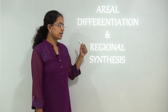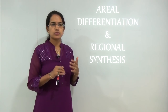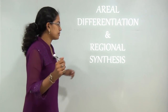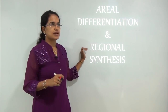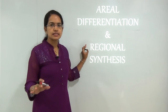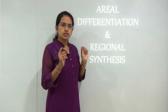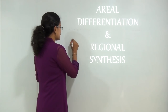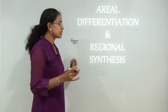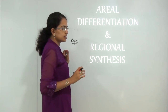Today we will be understanding area differentiation and regional synthesis. In the previous session we have already talked about system analysis and the modern perspectives in human geography. Today we will be understanding one of the basic perspectives that was most common during the phase of late 19th century to early 20th century, and that is the concept of region. When I say the concept of region, I try to understand the concept of regional geography. Within regional geography, we would be trying to understand area differentiation and regional synthesis.